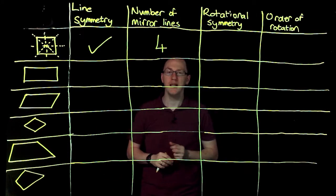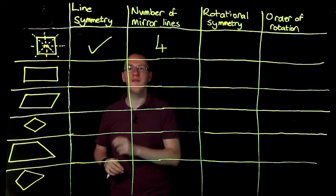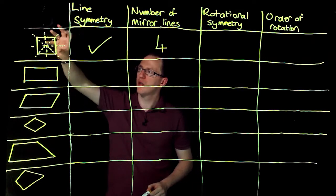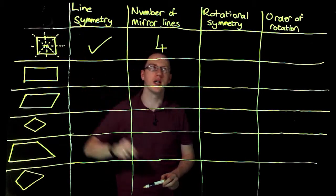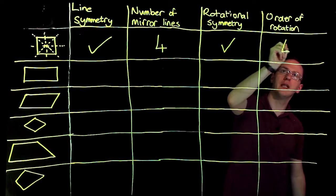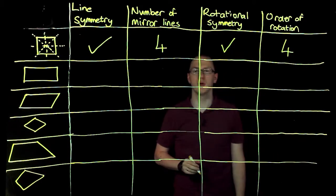Now I think about rotating my square. I can see it can fit inside itself. It can fit inside itself once, twice, three times, four times. So it has rotational symmetry. And the order of rotation is rotation symmetry four.